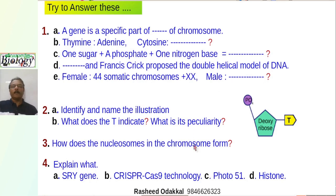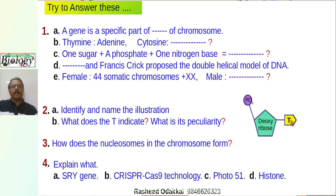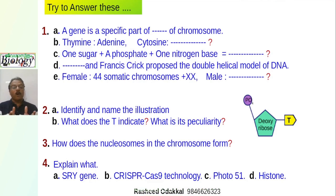Second question: Identify the illustration. This is a thymine nucleotide — the T indicates thymine, a nitrogen base. It is a nitrogen-containing alkaline molecule. Third question: How are nucleosomes in chromosomes formed? DNA strands wind around a histone octamer composed of eight histone proteins to form a nucleosome. Chains of nucleosomes are packed, coiled, and again coiled and packed to form a chromosome.